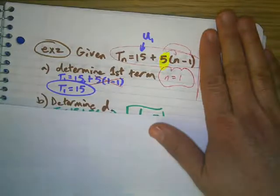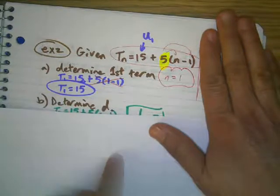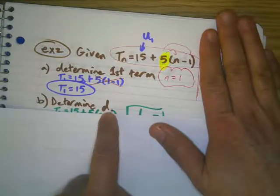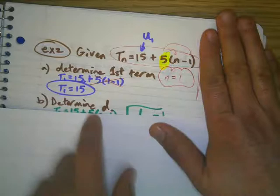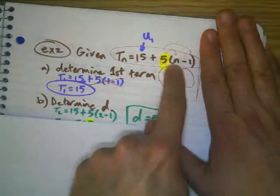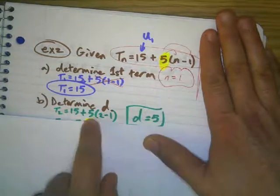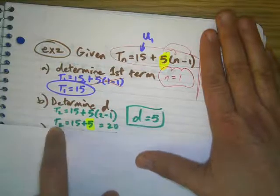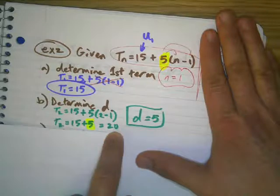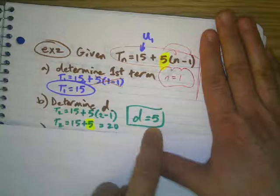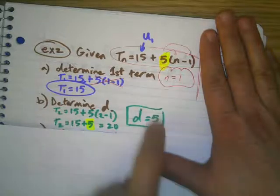Now if they ask you to find d, well d is the 5. But let's check for understanding. If I want to find d, I could figure out t sub 2. If I plugged in 2 for n, I'd have 5 times 2 minus 1, giving me 1, so the second term is going to be 20. From 15 to 20, we increased by 5. This value gives us d.